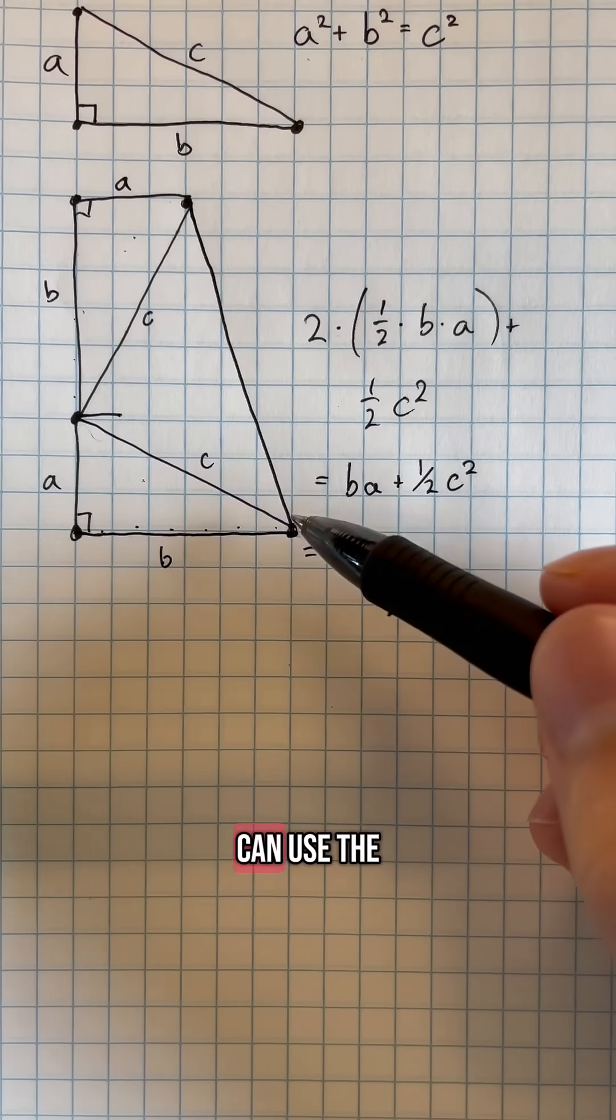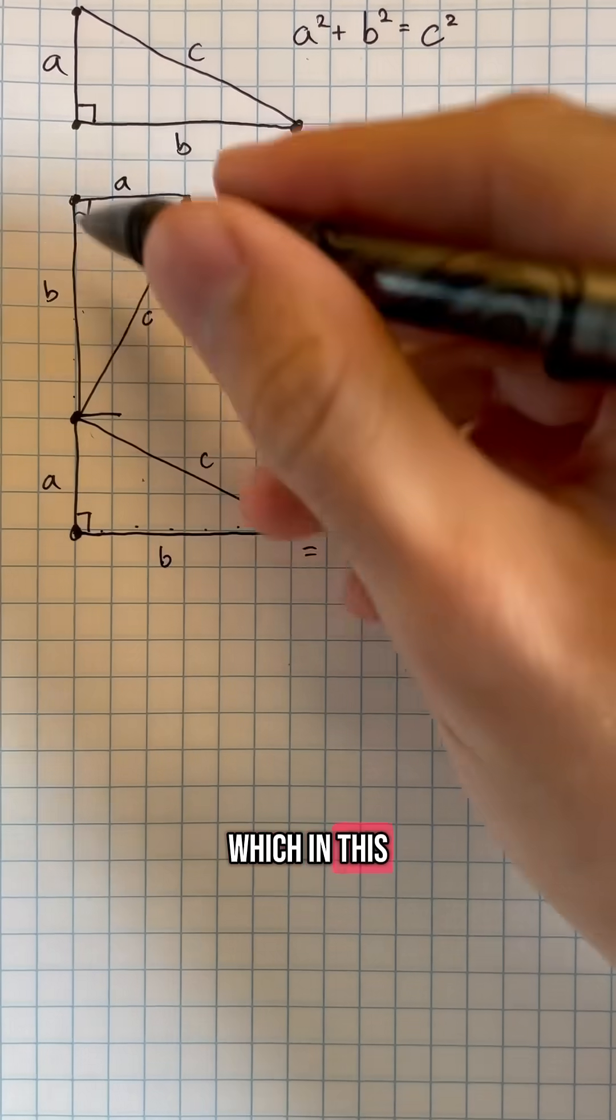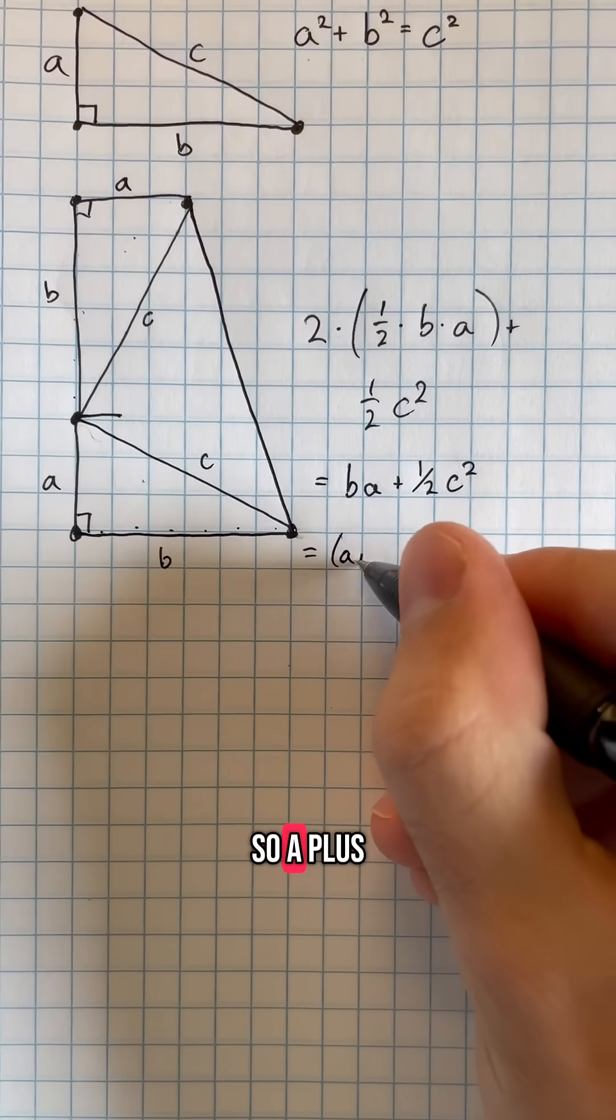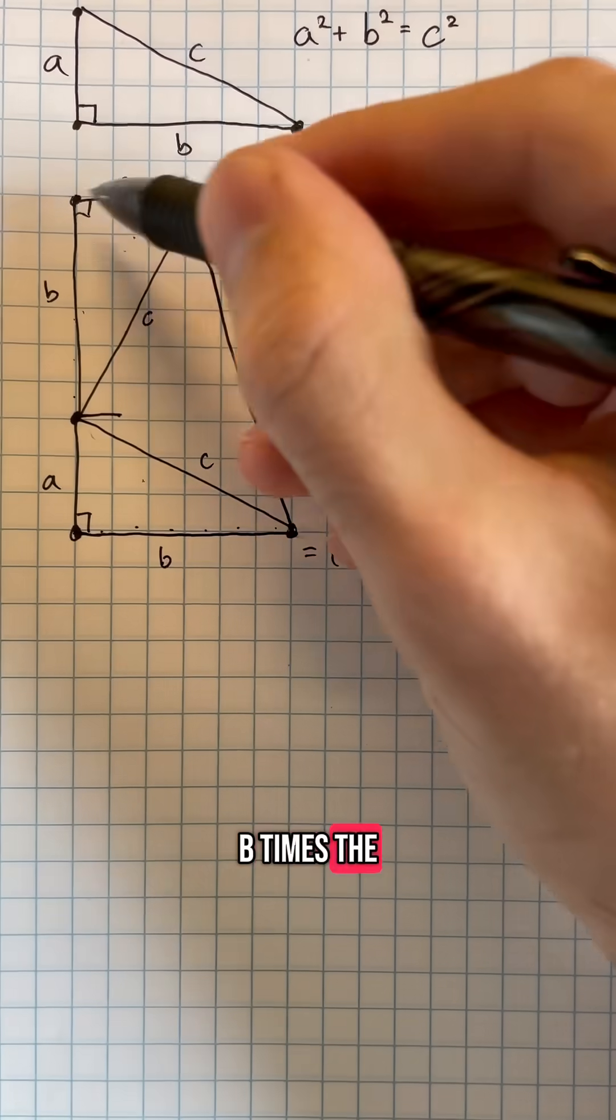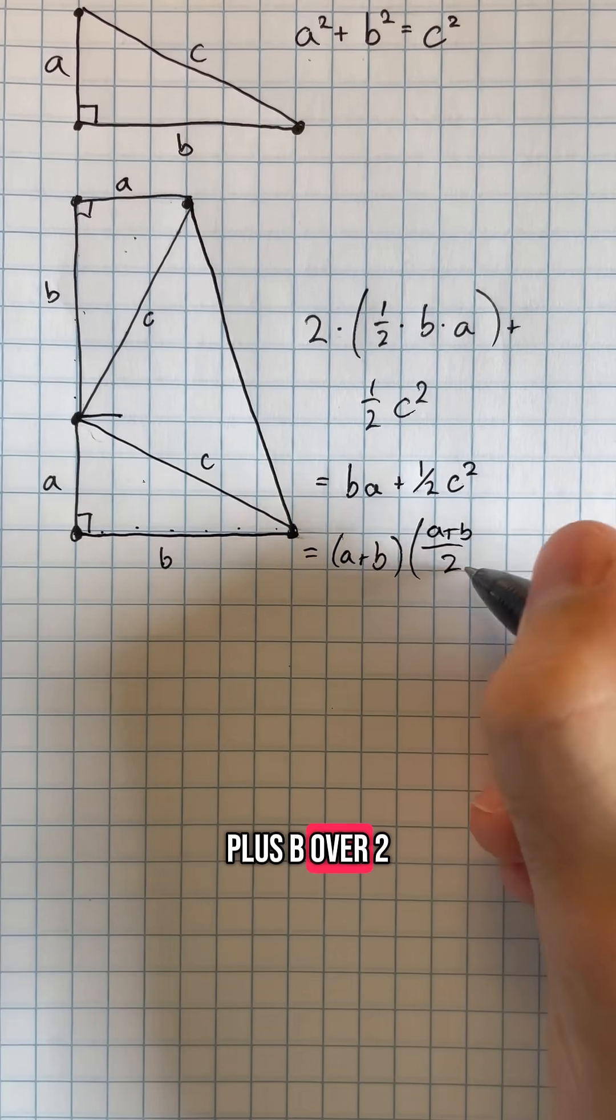As such, we can use the formula to find the area of the trapezoid, which is the height of the trapezoid, which in this case is a + b, so (a + b) times the average of the top and the bottom, which is going to be (a + b)/2.